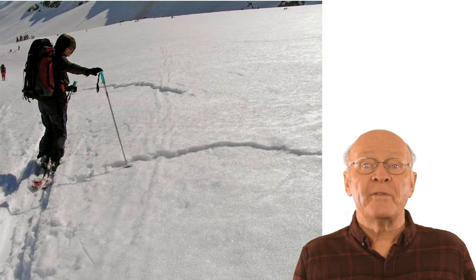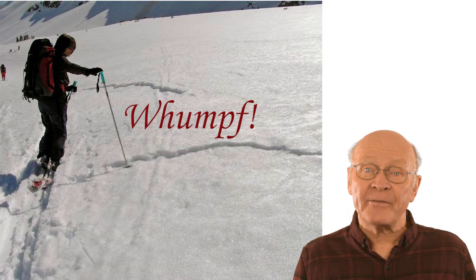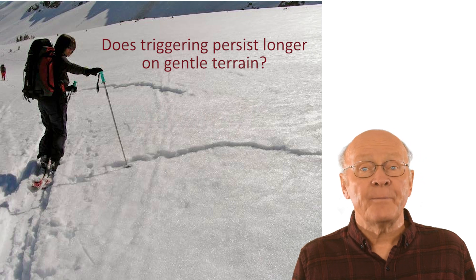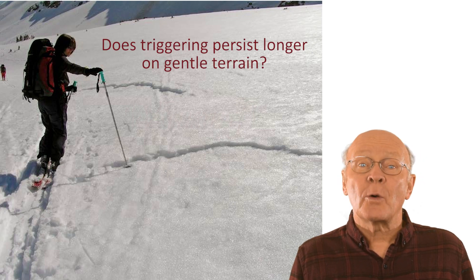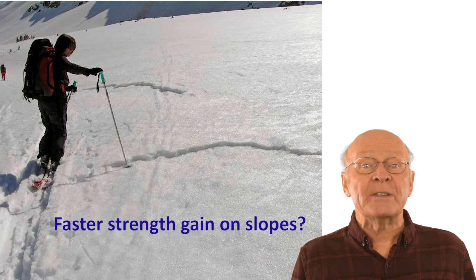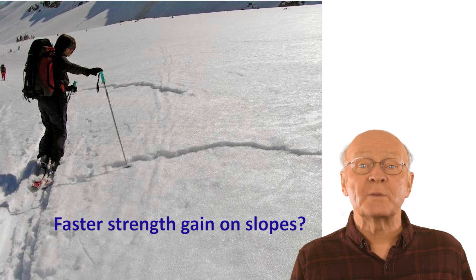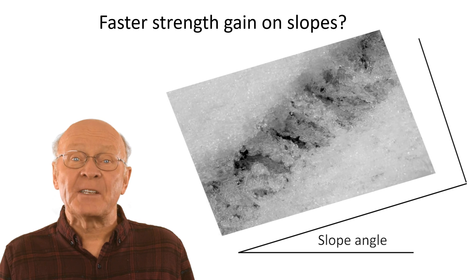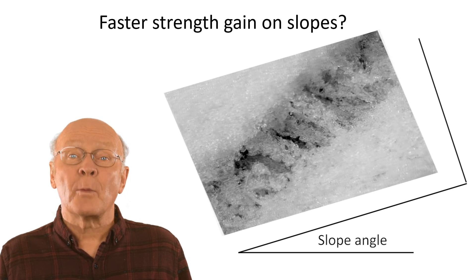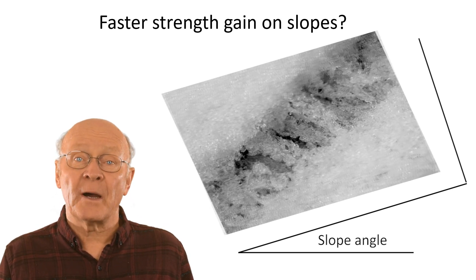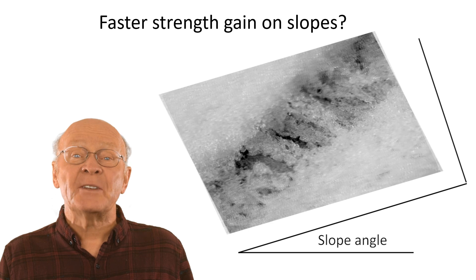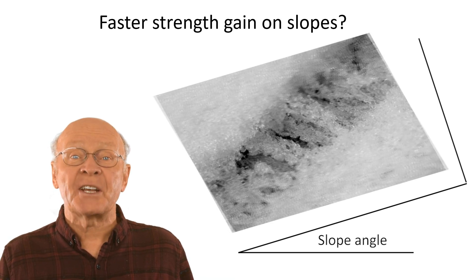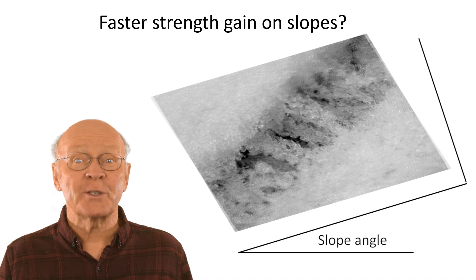Have you ever triggered a wumpf on a particular layer of surface oar after the last reported avalanche on a slope on the same layer? The question is: why do surface oar layers seem to stabilize faster on slopes than on flats? Some researchers think that as creep tilts surface oar crystals on a slope, there are more contacts, which results in more bonds between crystals. This would tend to strengthen the surface oar layer more on steep slopes than on gentle terrain.